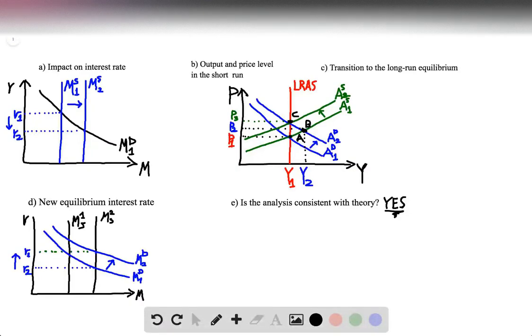Moving on to question two, we've been given that the Federal Reserve expands the money supply by 5%. In part A, we need to use the theory of liquidity preference to illustrate in a graph the impact of this policy on the interest rate.